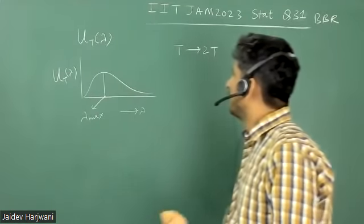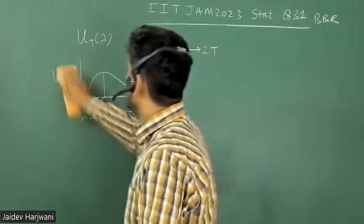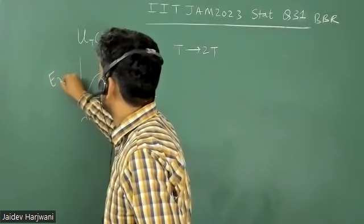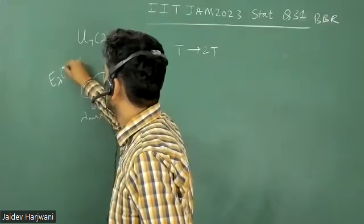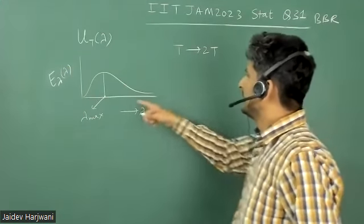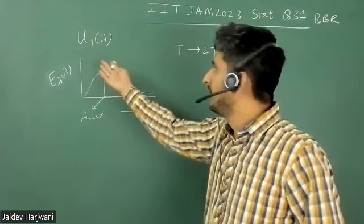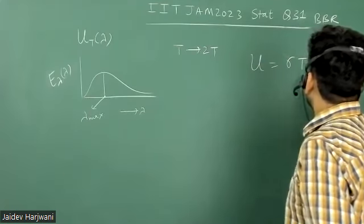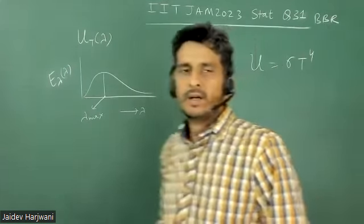So, this is the black body radiation curve, and it is given by some energy density, E lambda. And when I integrate it for all the wavelengths, we get UT, which is actually U is equal to sigma T to the power four, which is Stephen's law.